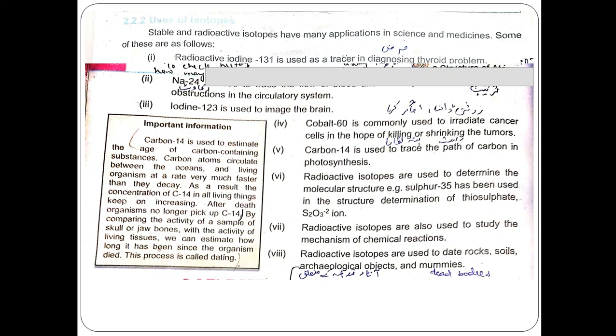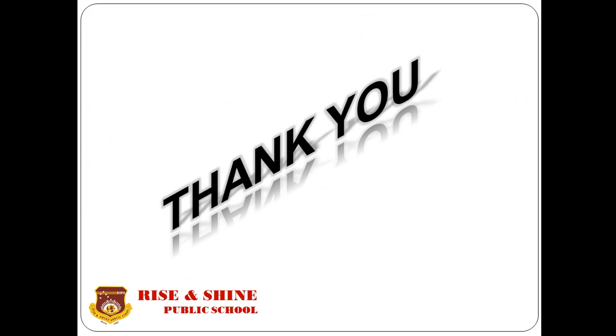Carbon-14 is used to estimate the age of carbon-containing substances. Carbon atoms circulate between the oceans and living organisms much faster than they decay. As a result, the concentration of carbon-14 in all living things keeps increasing. After death, organisms no longer take up carbon-14. By comparing the activity of a sample — such as skull and jaw bones — with the activity of living tissues, we can estimate how long it has been since the organism died. This process is called carbon dating.